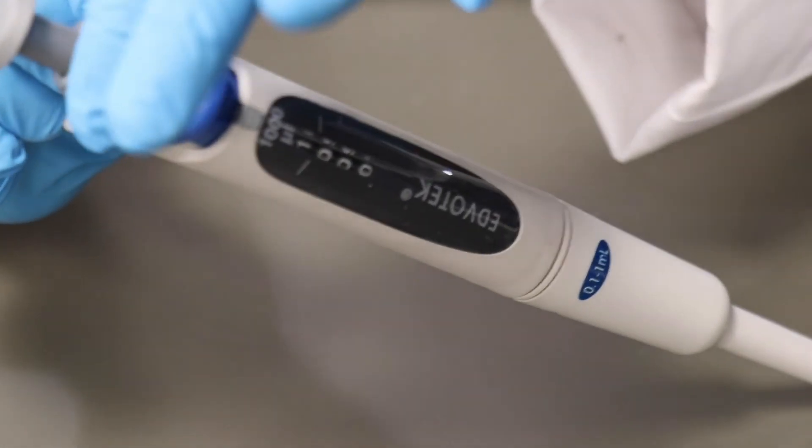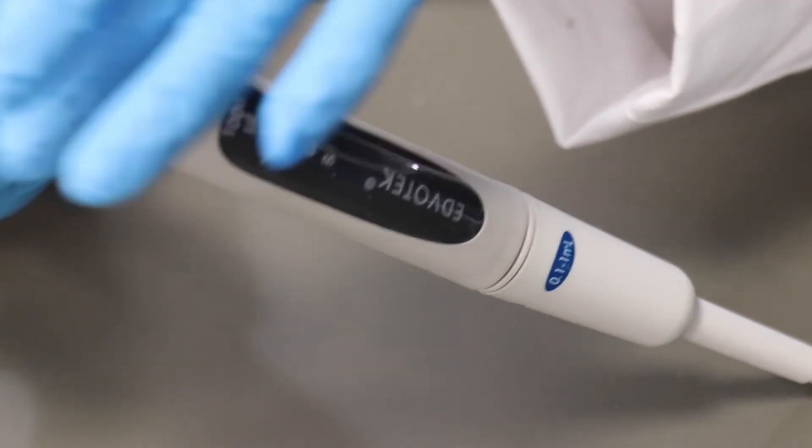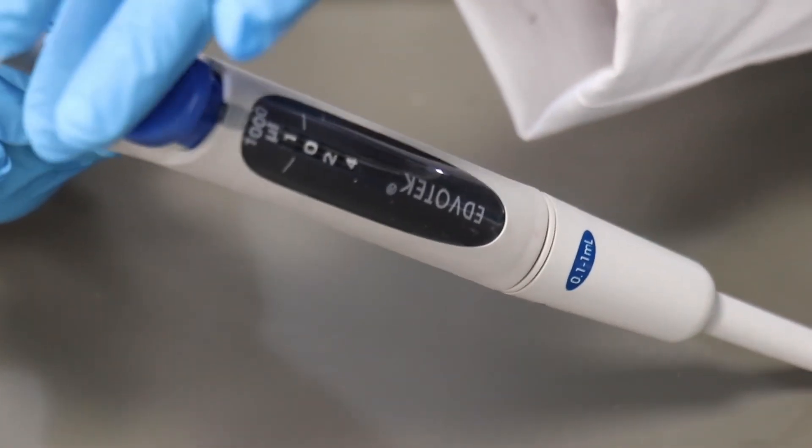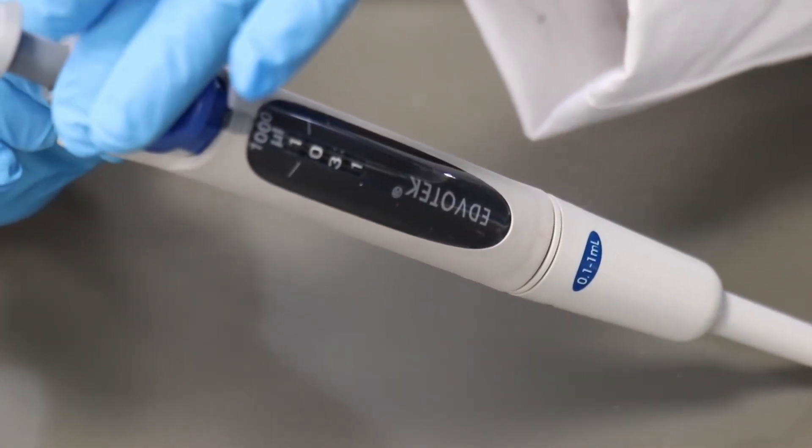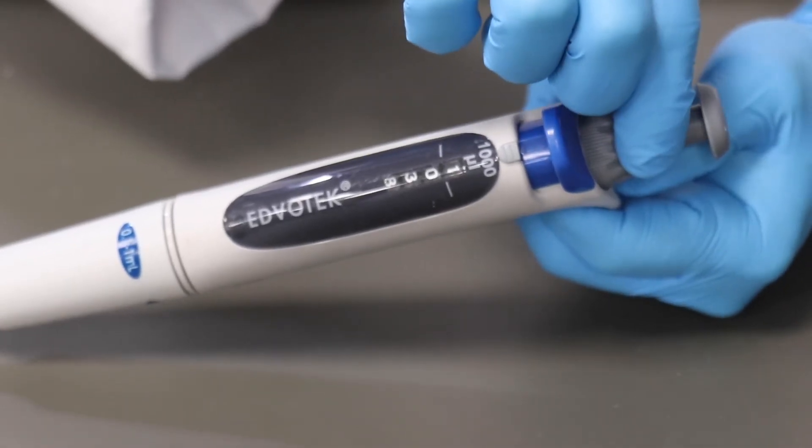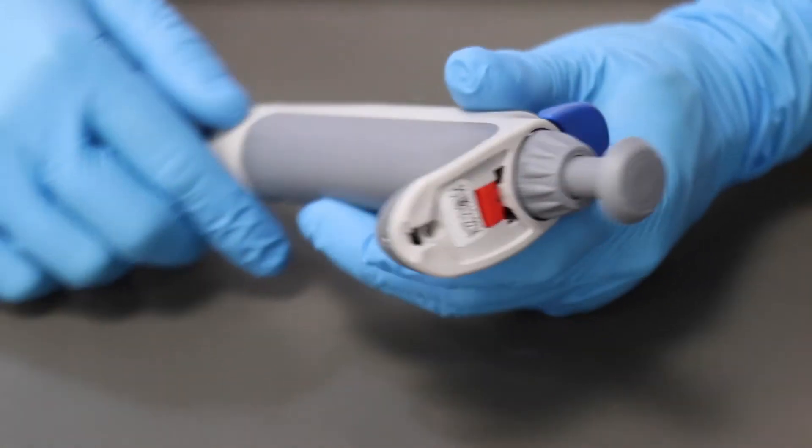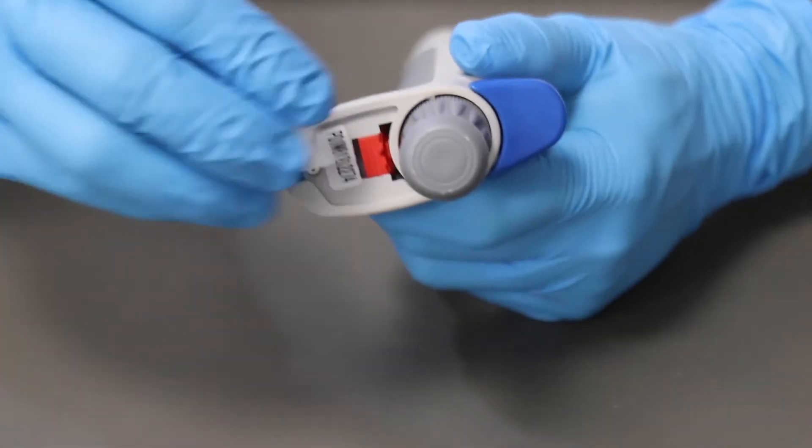While continuing to hold the red tab, turn the dial until the readout on the micropipet matches the actual measured weight displayed on the balance. Once this value has been set, push down on the dial to its original position and release the red tab to lock it into place.